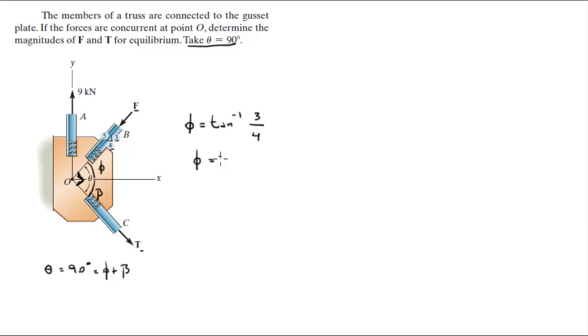So phi is equal to 36.9 degrees. And you know that phi plus beta is 90. So if you solve for beta, you find right off the bat that beta is equal to 90 minus phi, which is equal to 53.1 degrees.